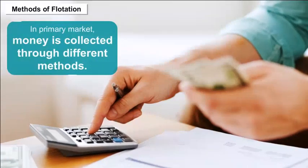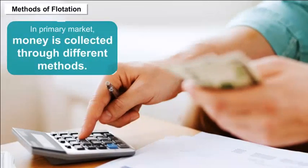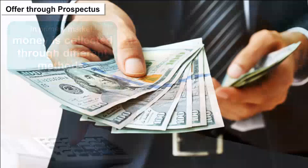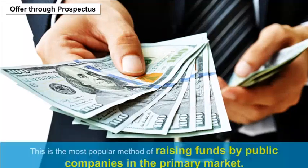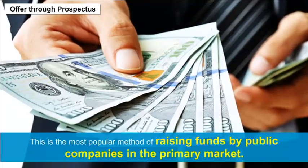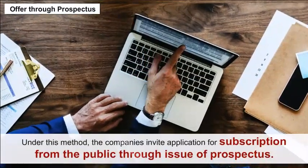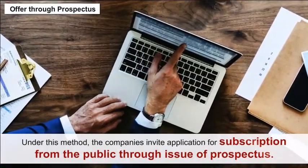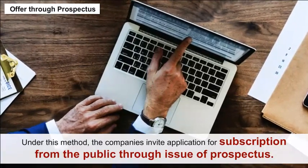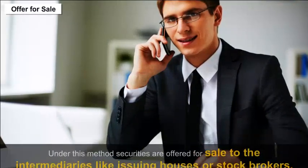Methods of flotation in the primary market — money is collected through different methods. Offer through prospectus: this is the most popular method of raising funds by public companies in the primary market. Under this method, companies invite applications for subscription from the public through the issue of a prospectus.